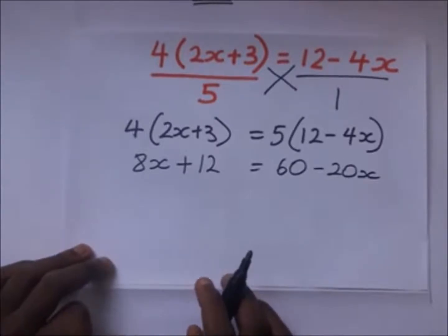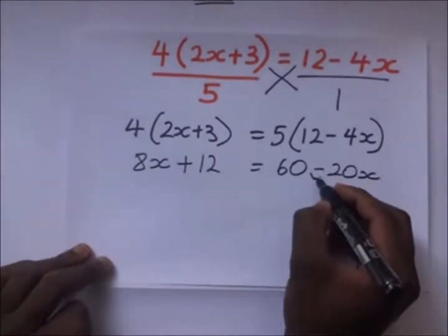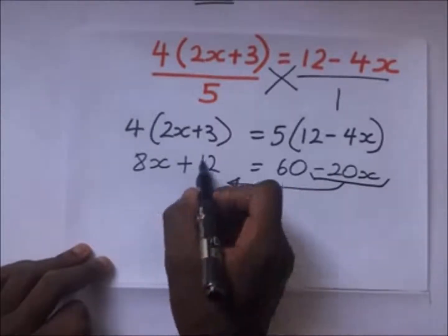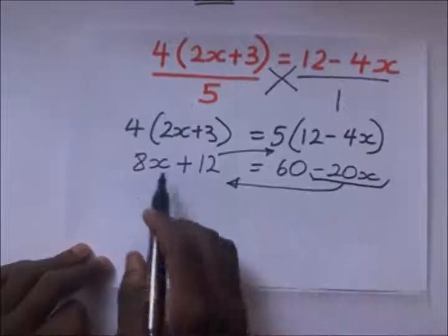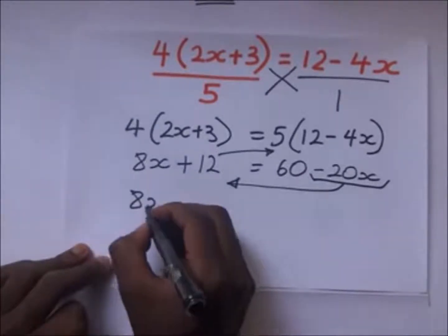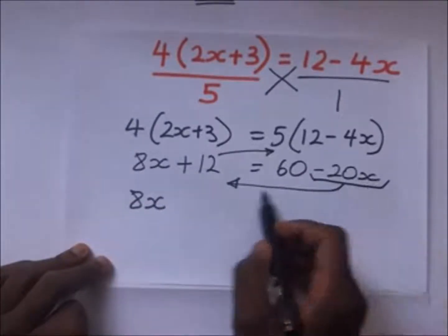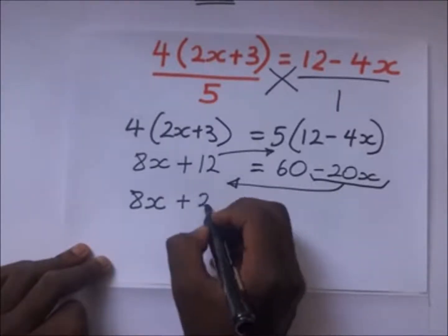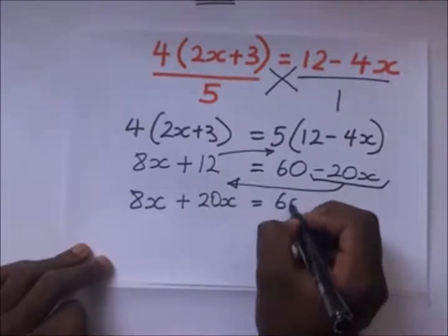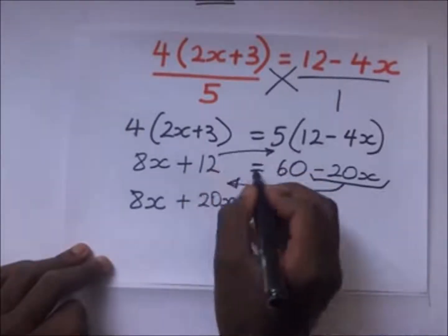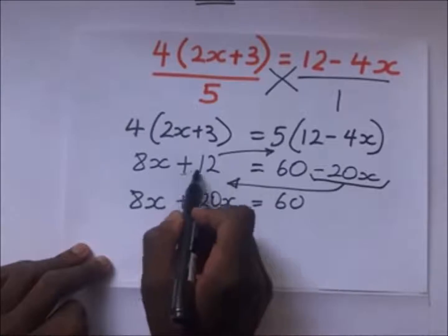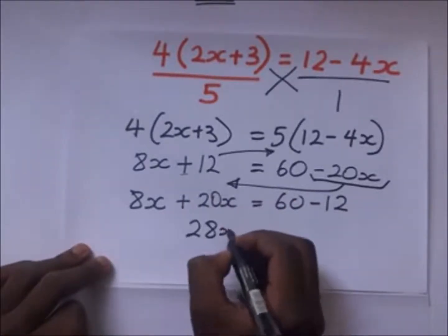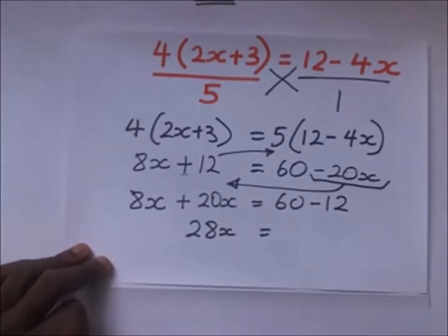From there we collect like terms — those having x go on one side. The negative 20x crosses the equal sign and becomes positive 20x. The 12 crosses the equal sign and becomes minus 12. So we remain with 8x plus 20x giving 28x, equal to 60 minus 12.